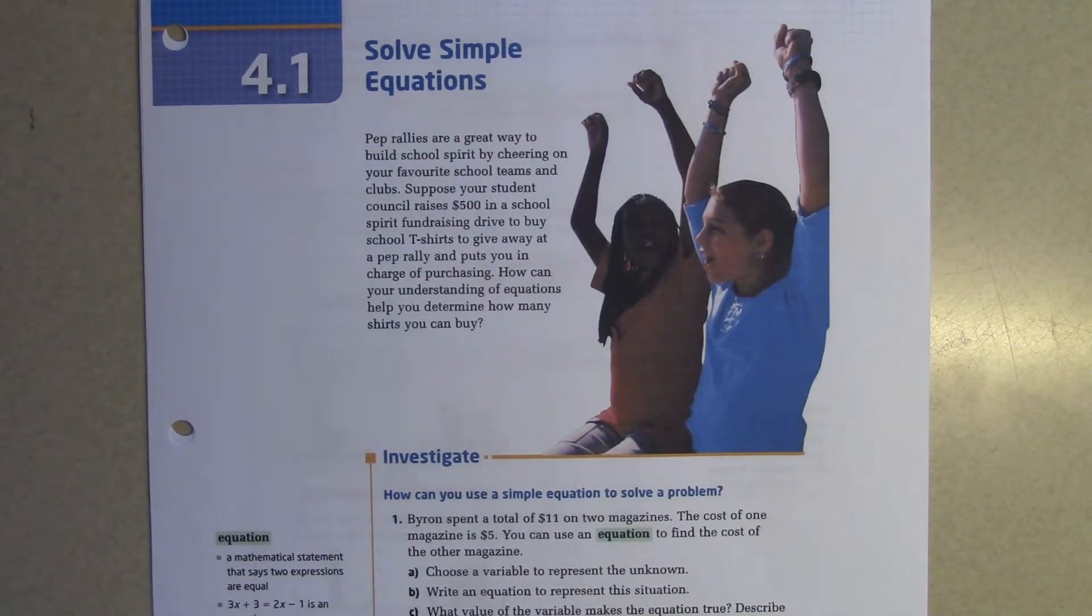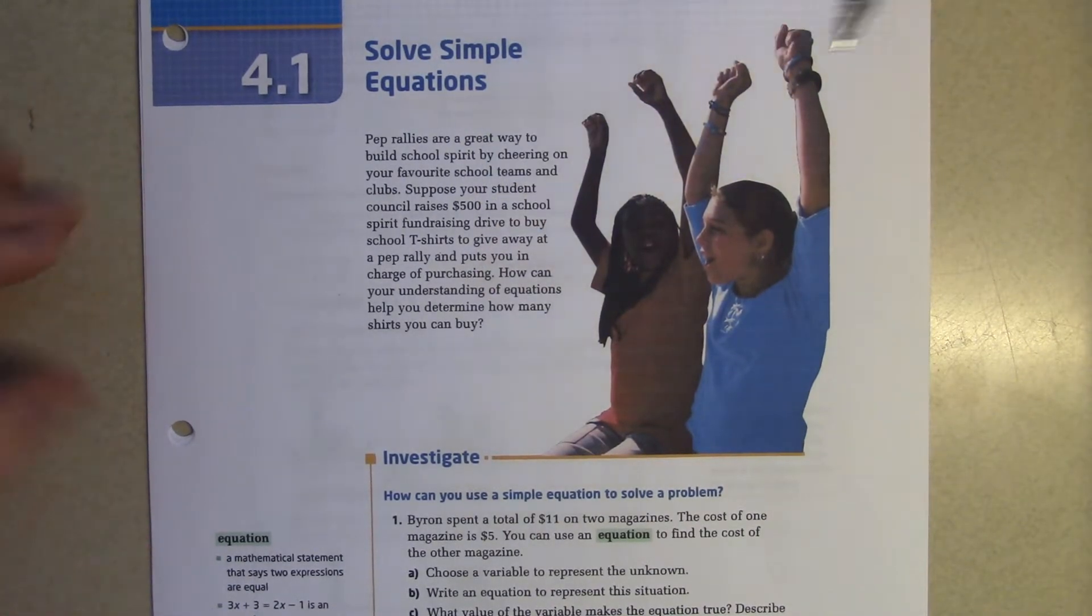Okay, this is section 4.1 in your textbooks. We're looking at solving algebraic equations. What I mean by that is we're going to solve for the variable value given an equation. Someone would like to read that first blurb. We're going to use what we've already learned about variables, where we let a variable represent something and create an equation, then use that equation to solve for the unknown.